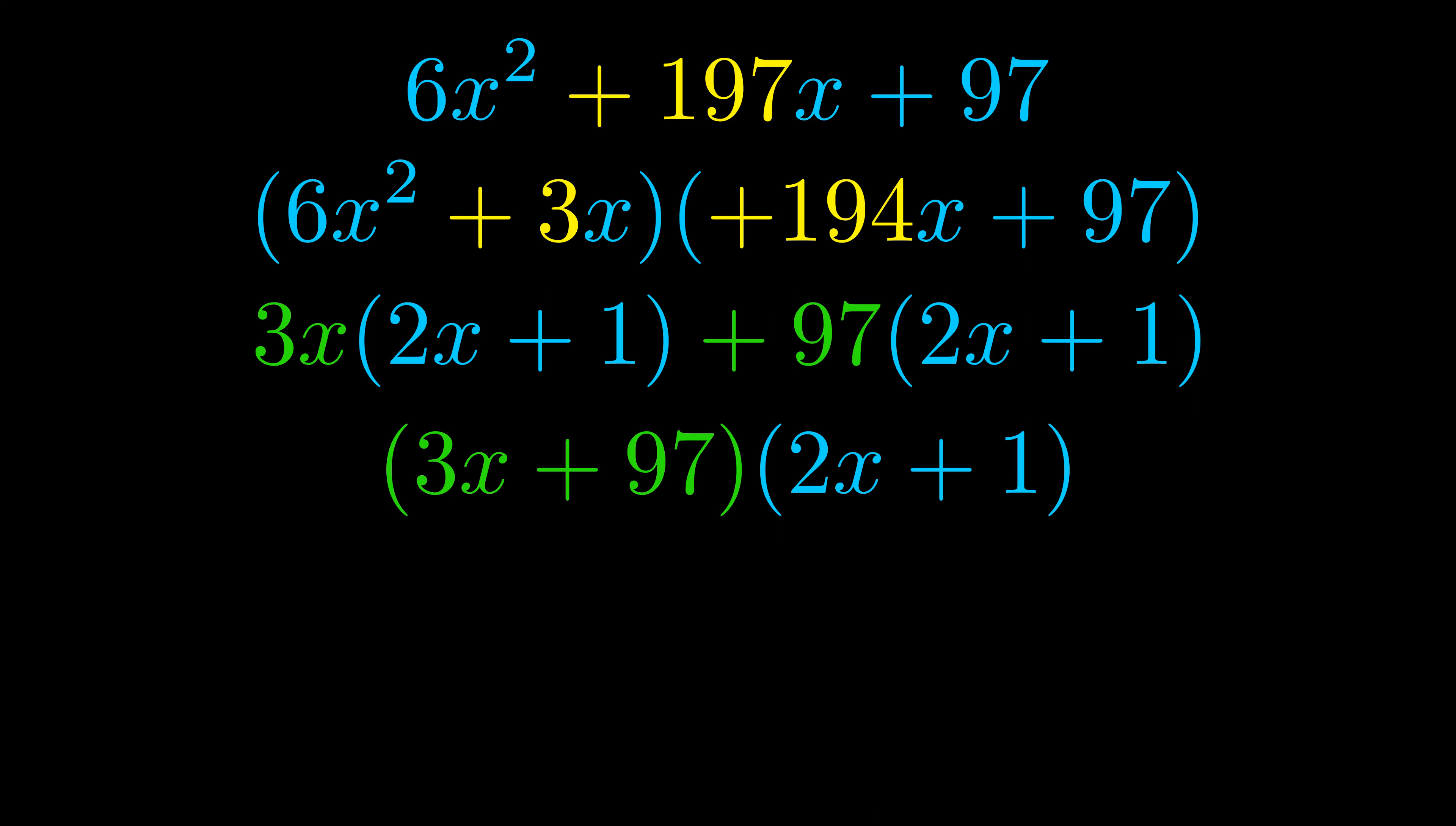Those blue values will become one of our factors and we will combine the two green values the GCFs that we pulled out to get the other one. And that is our fully factored equation.